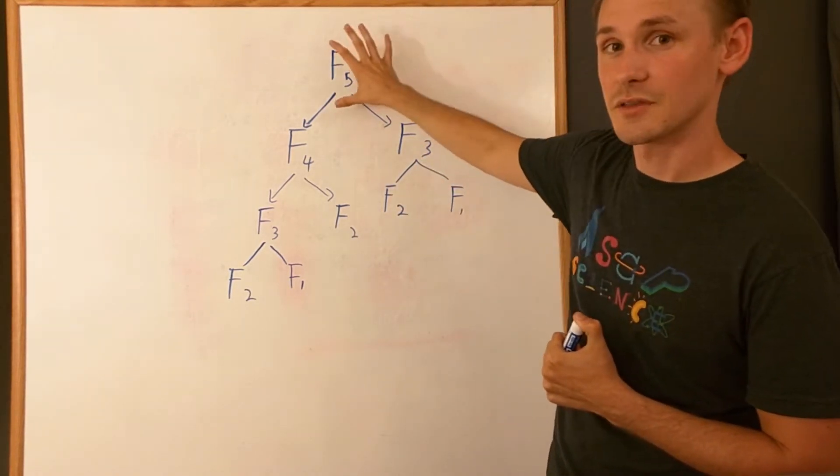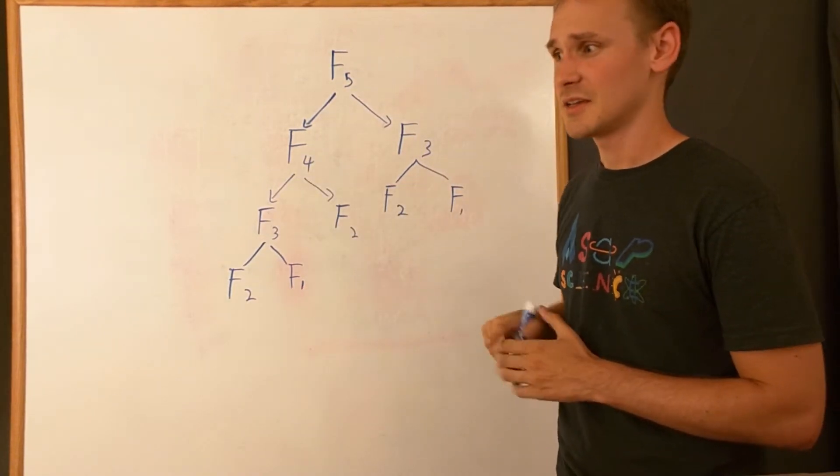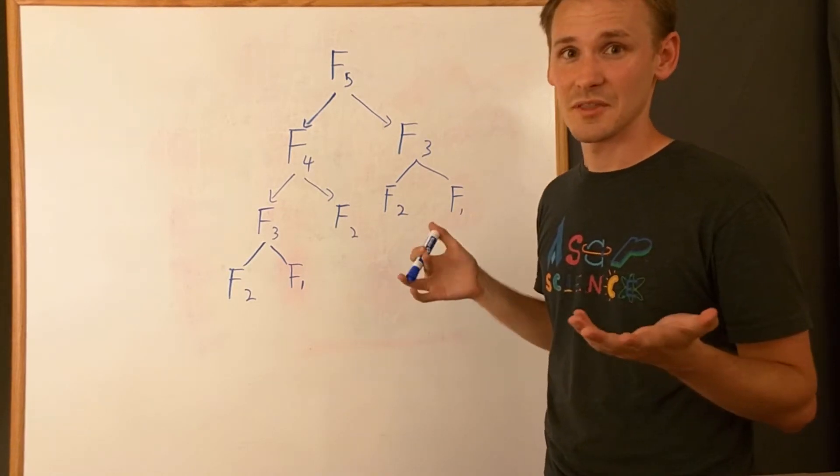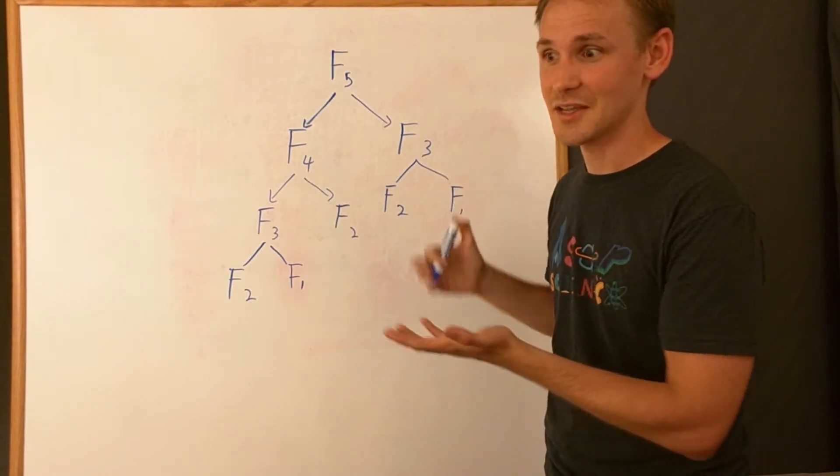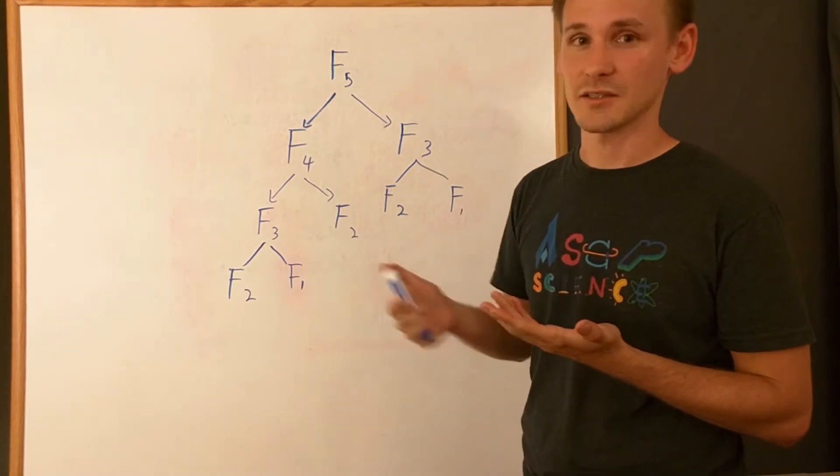And if I were to go calculate the sixth Fibonacci number, I would essentially have to calculate the fifth Fibonacci number all over again, as well as the fourth Fibonacci number all over again. So I almost double the amount of branches that I have to take, or the amount of steps that I have to take in order to calculate the next Fibonacci number.